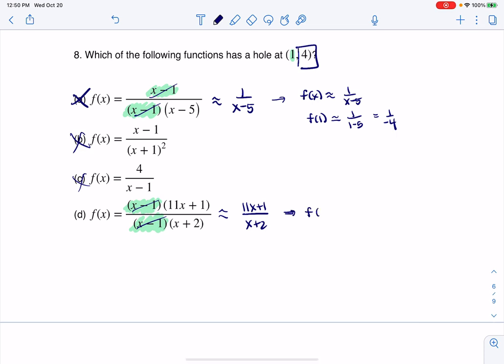If we had f of x was approximately 11x plus 1 over x plus 2, then f of 1, had it been there, it's not, it's a hole, but we're going to see what should have been there. This would have been 11 times 1 plus 1 over 1 plus 2.